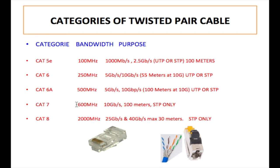Category 7 runs at a frequency of 600 megahertz with a speed of 10 gigabits per second at 100 meters. However, Category 7 only uses STP — shielded twisted pair — cable. UTP stands for unshielded twisted pair and STP stands for shielded twisted pair. Category 8 runs at a frequency of 2000 megahertz, with speeds of 25 gigabits per second and 40 gigabits per second. The maximum distance for Category 8 is 30 meters, and it also uses STP cable only.